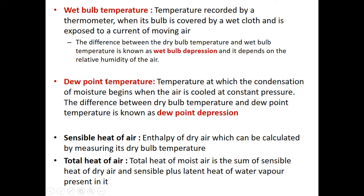Dew point temperature is the temperature at which condensation of moisture begins when the air is cooled at constant pressure — that is, vapor converting to liquid. The difference between DBT and WBT is called wet bulb depression. Similarly, the difference between the dry bulb temperature and the dew point temperature is called dew point depression.